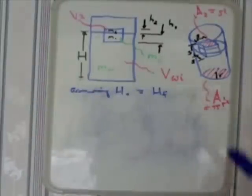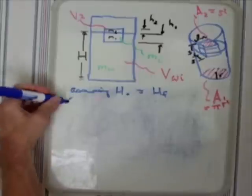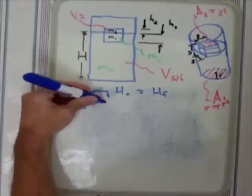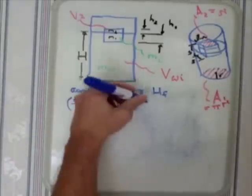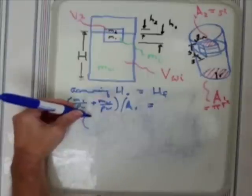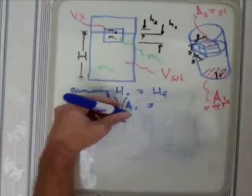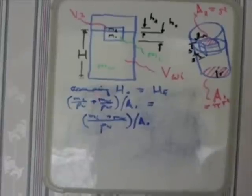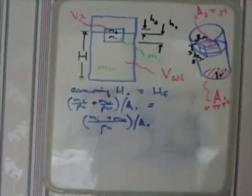Assuming that the initial height equals the final height, we can rewrite that in these terms. M1 over density of ice plus Mw over the density of water all over A1 equals Mi over Mw over rho W all over A1.